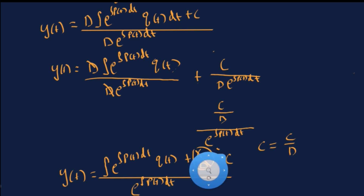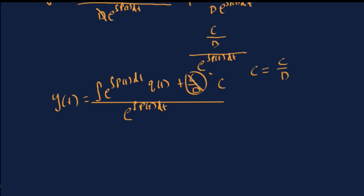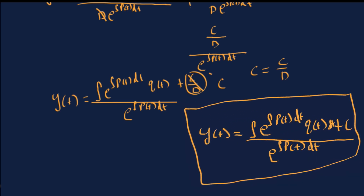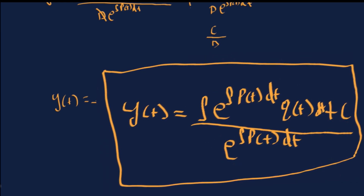So the final general solution for the linear first-order differential equation is y(t) equals the integral of e raised to the integral of p(t) dt times q(t) dt, plus c, all over e raised to the integral of p(t) dt. And there you have it — this is the final formula for the general solution of a linear first-order differential equation.